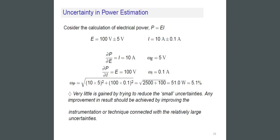Uncertainty in power estimation. Consider the calculation of electrical power P = EI, where E = 100 V ±5 V and I = 10 A ±0.1 A. We can write ∂P/∂E = I = 10 A where w_E = 5 V, and ∂P/∂I = E = 100 V where w_I = 0.1 A. Therefore w_P = √((10×5)² + (100×0.1)²) = √(2500 + 100) = 51 W, or 5.1%.